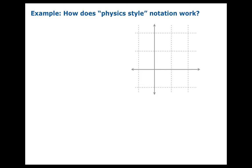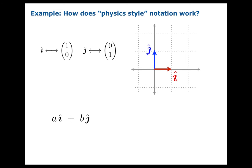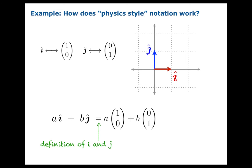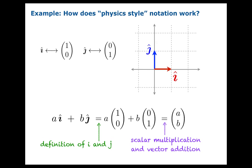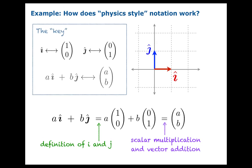Finally, let's take a look at physics style notation and why it works. You define i-hat as the unit vector one, zero and j-hat as the vector zero, one. When you take a times i-hat plus b times j-hat, substituting in those definitions, you're really taking a times the vector one, zero plus b times the vector zero, one. Applying scalar multiplication and vector addition, you simply get the vector a, b. So a i-hat plus b j-hat is just code for the column vector a, b — and that's the key to going back and forth between these two very different styles that are both used quite often.